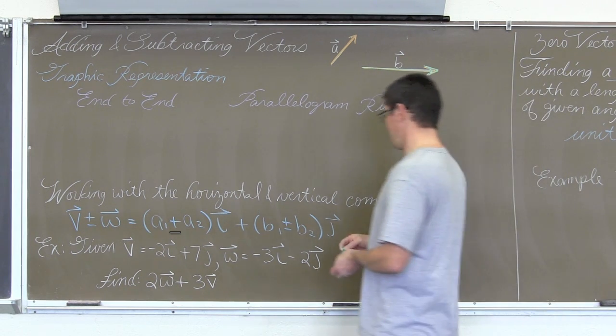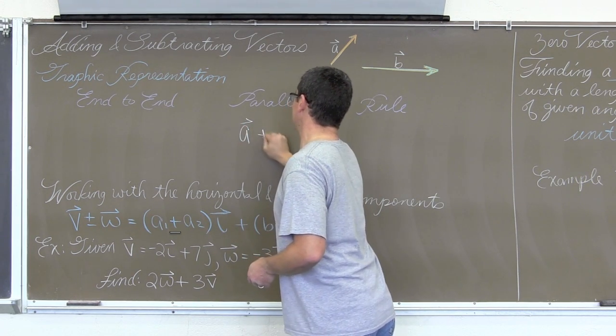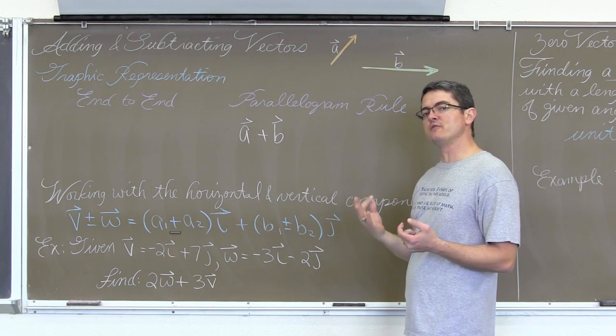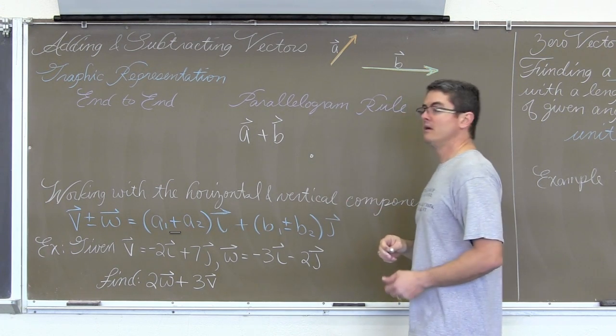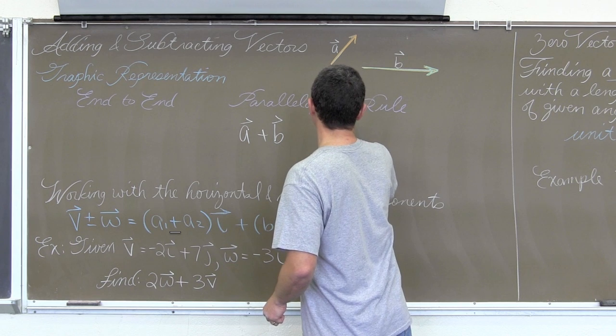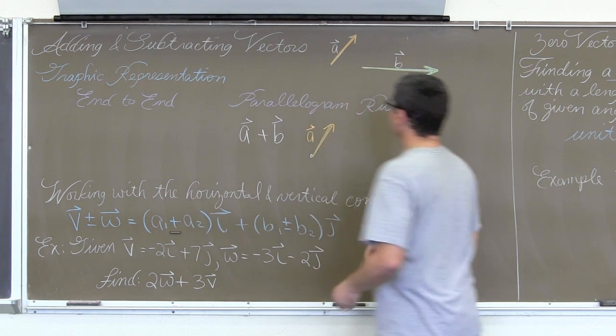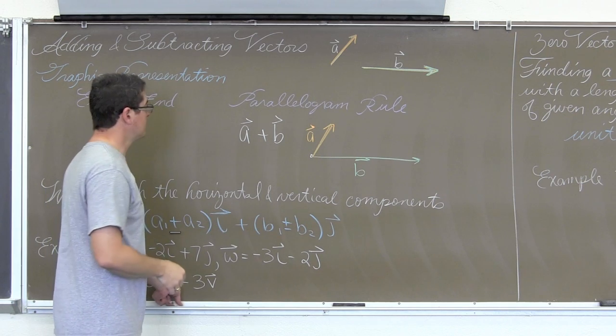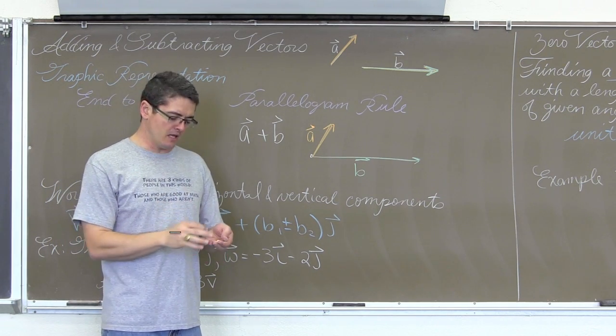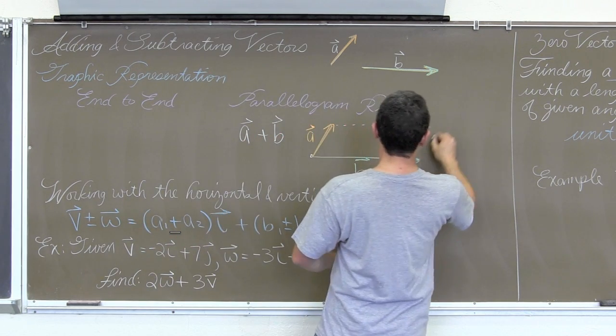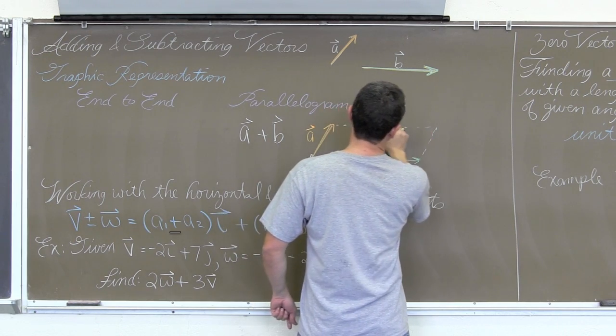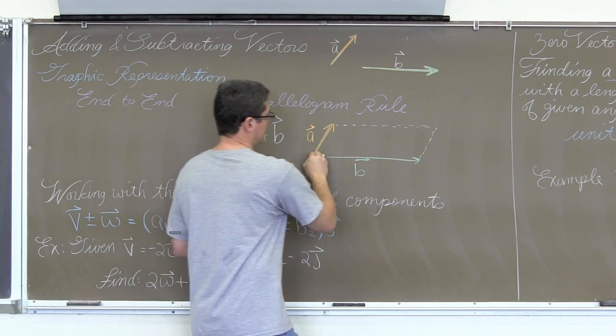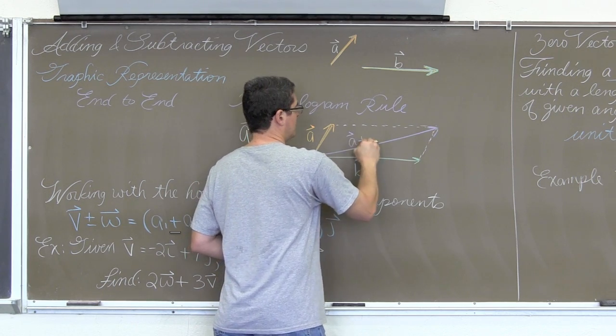If I want to draw vector a plus vector b, if I am doing the parallelogram rule that means I am going to start both vectors at the same initial point. So there is a point. Here is, as best I can estimate it, vector a. Here is vector b. And the resultant is going to be drawn through the parallelogram that I can make with those two sides. Try and get a reasonable representation of a parallelogram. And then I am going to draw a diagonal through that parallelogram. And that diagonal is going to be my resultant vector, or vector a plus vector b.